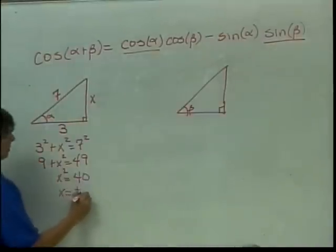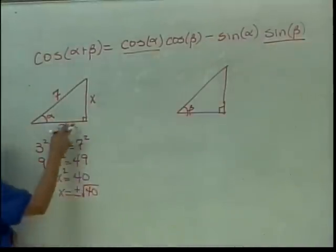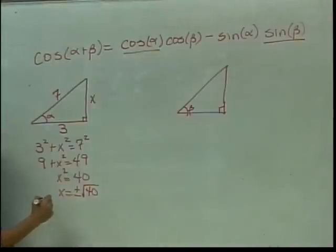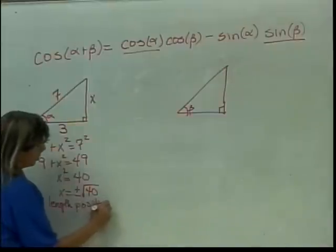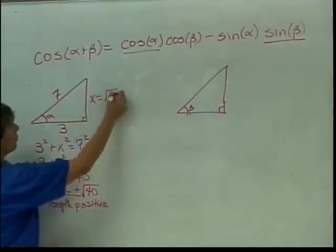plus or minus the square root of 40. We're dealing with a triangle, so what do we say? Length is positive.